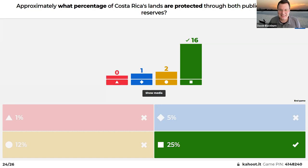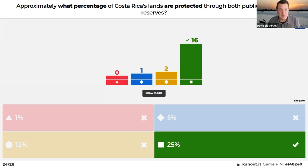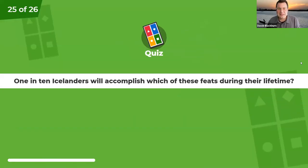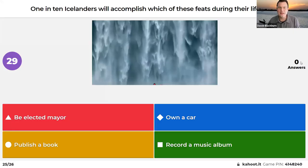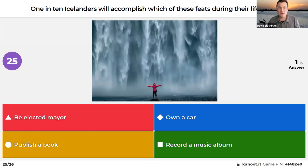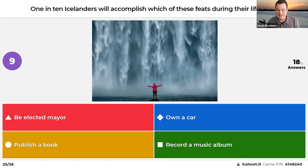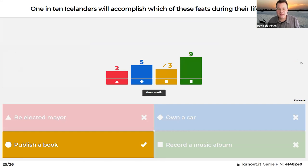One in ten Icelanders will accomplish which of these feats: be elected mayor, publish a book, own a car, or record a music album? Horacio guessed elected mayor. David joked there might not be that many people in Iceland. The answer is publish a book — one in ten people in Iceland publishes a book. David's own guess was record a music album. What do the other nine do? It's a very literate country.